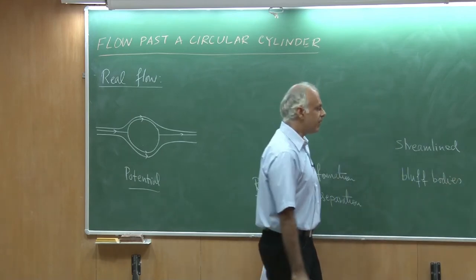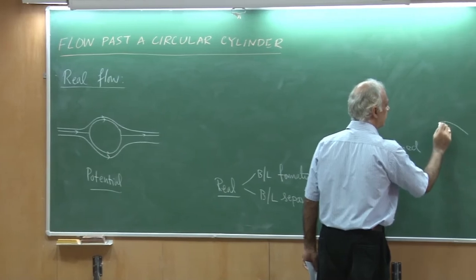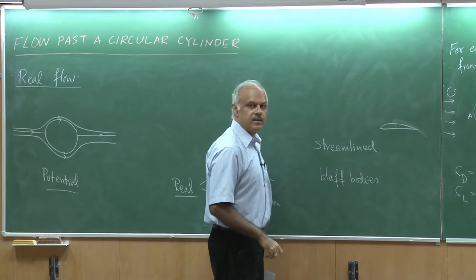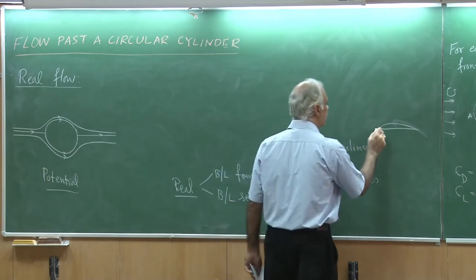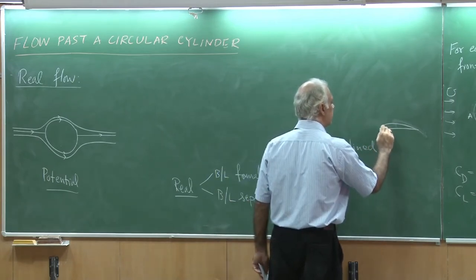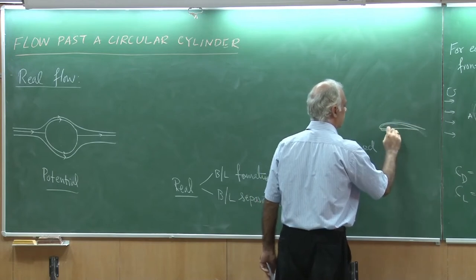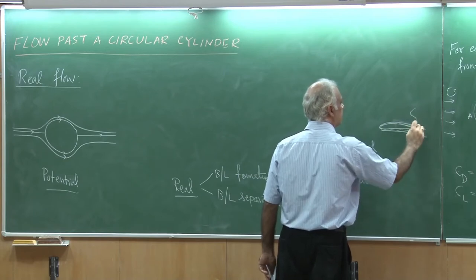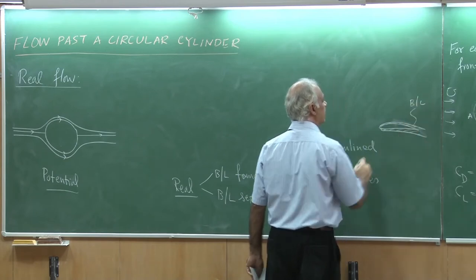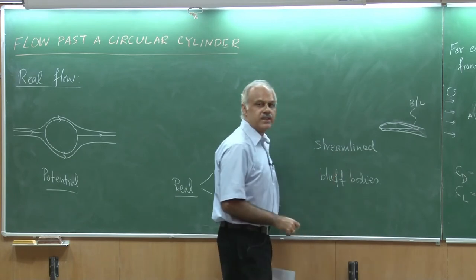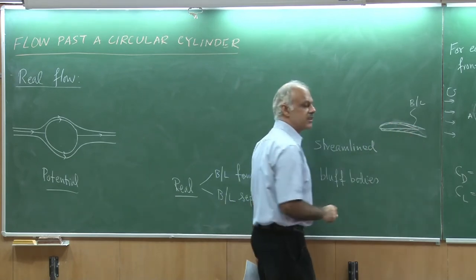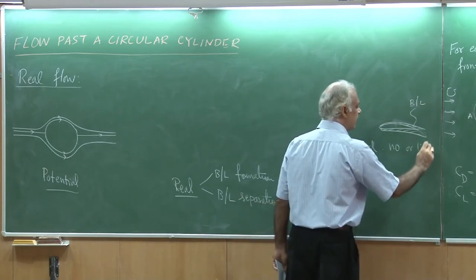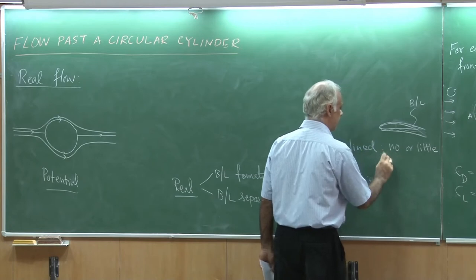An example of a streamlined body is an airfoil. In a streamlined body, the boundary layer remains attached to the surface of the body — so there is no or little flow separation.